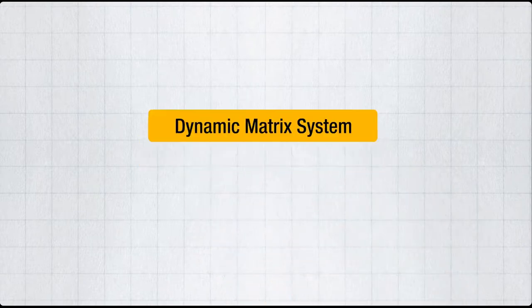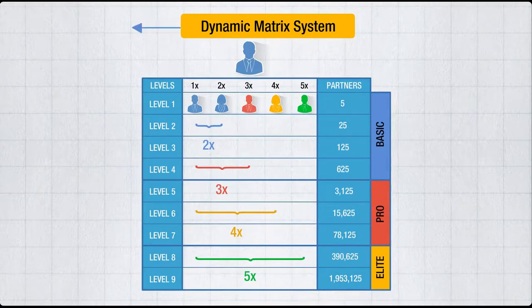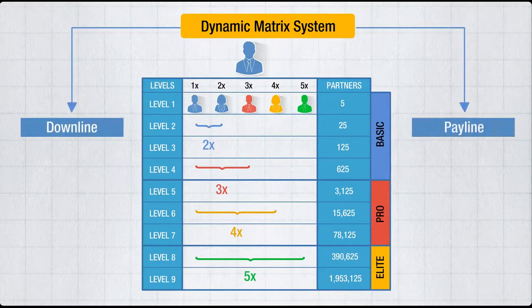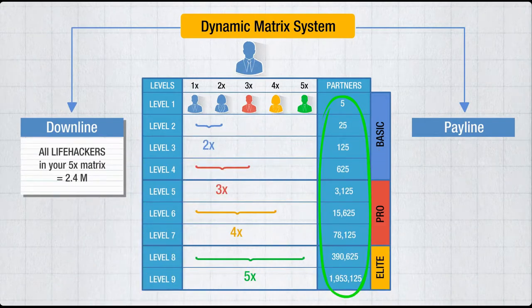The dynamic matrix is a 5x matrix that starts at 2x and expands by rules. Downline and payline explain it all. Downline is all life hackers in your 5x matrix that covers nine levels. It contains more than 2.4 million life hackers.